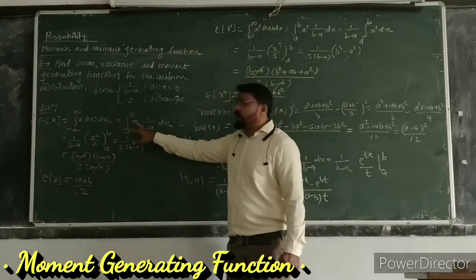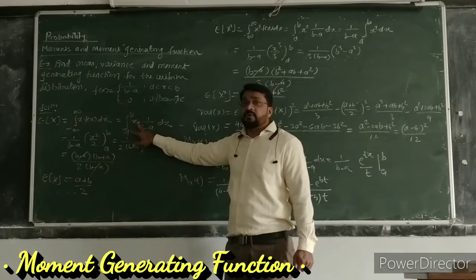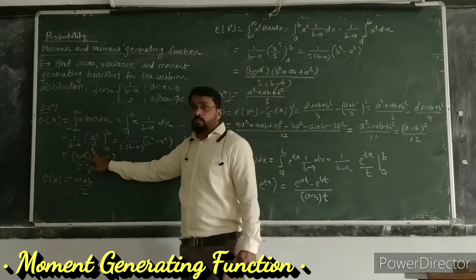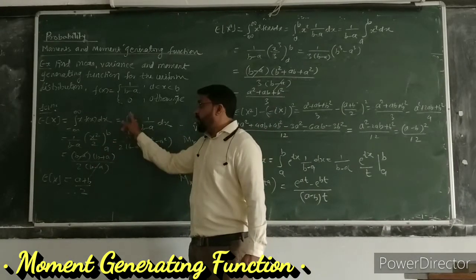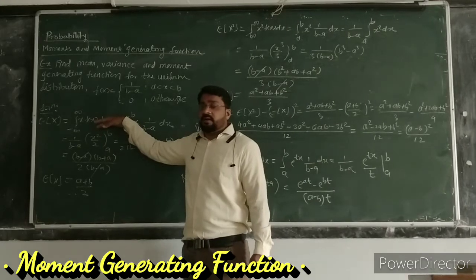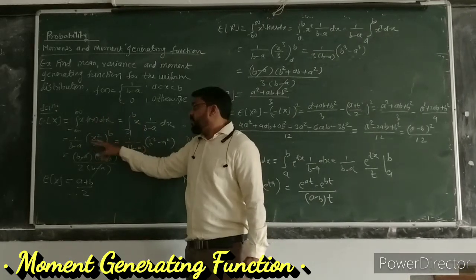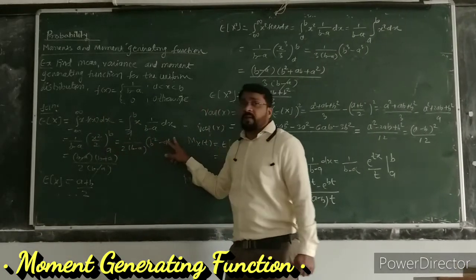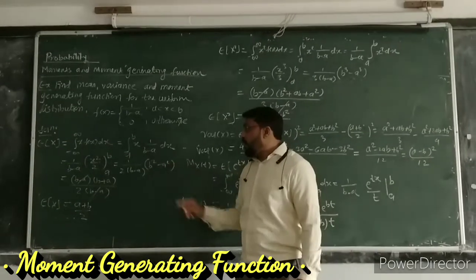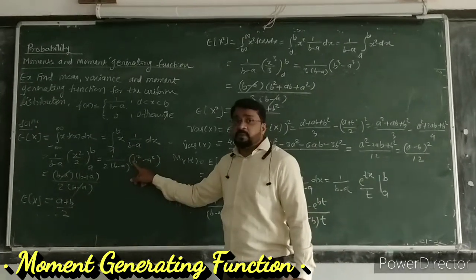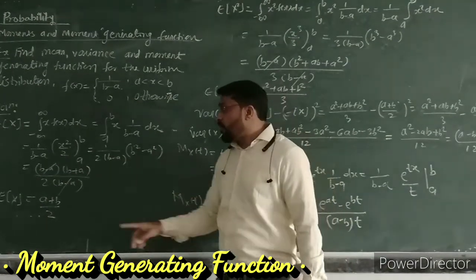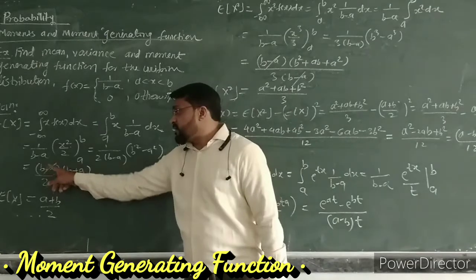Now we do the integration of x, which gives x²/2. The limits are a to b, so we put in the limits: the upper limit gives b² and the lower limit gives a², resulting in b² minus a².